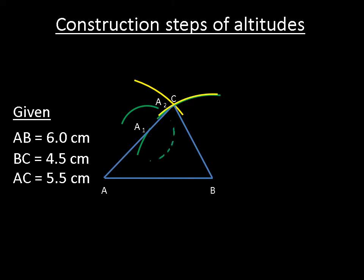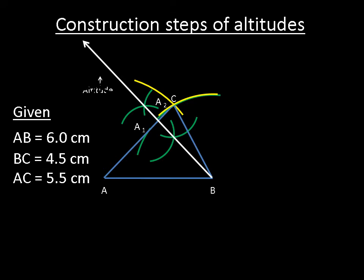Then draw arcs above and below the line AC. Now without changing the radius of compass, put the pointer of compass at point A2 and draw arcs above and below the line AC intersecting the previous arcs. Now with the help of a ruler, draw a straight line from point B passing through the intersecting points of these arcs. This is an altitude drawn from point B towards the line AC.